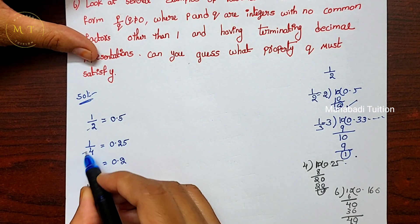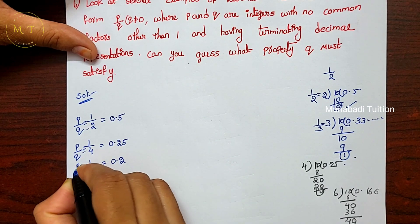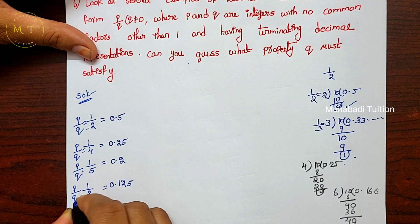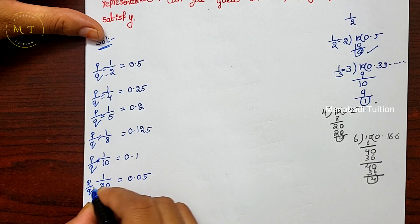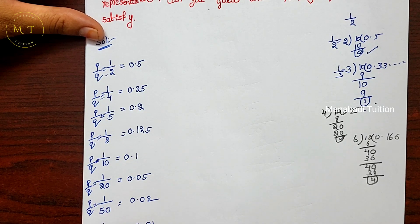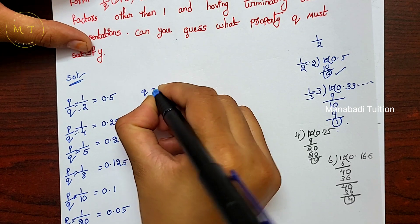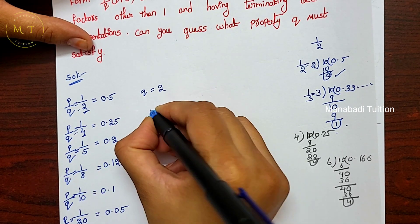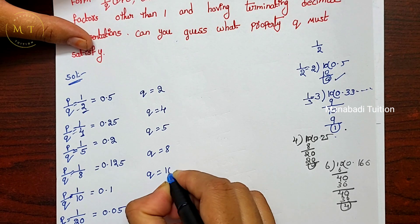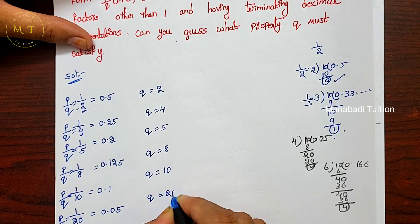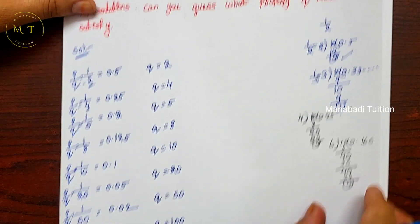Now let's look at the denominators q. Even when written in p by q form, the denominator q takes the following values: 2, 4, 5, 8, 10, 20, 50, and 100. So these are the denominator values for the terminating decimal examples we found.